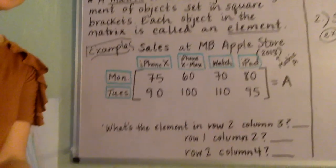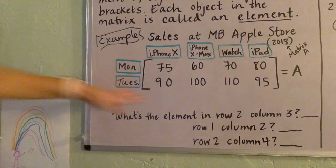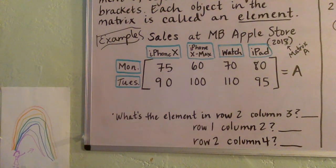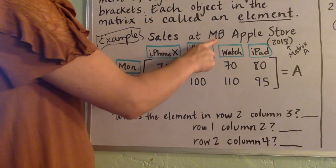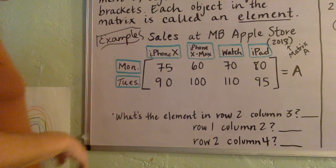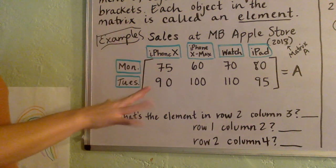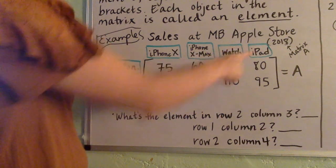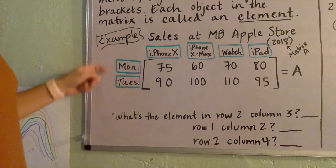Let's take a look at an example of a matrix. This was data actually from 2018, so it's a bit outdated, but even still, let's just take a look. This represents sales at the Manhattan Beach Apple Store of iPhone Xs. Remember back to when Xs was like the thing, right? iPhone X Max's watches and iPads over a two-day span, Monday and Tuesday.